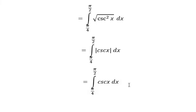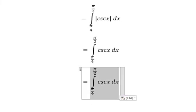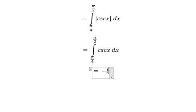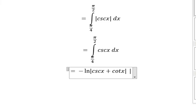The integral of csc(x) is negative ln of the absolute value of csc(x) plus cot(x). I will put the bounds from π/4 to π/2.